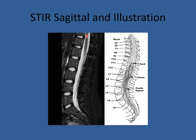The lateral view demonstrates the cord, which ends behind the body of L1, and you can see the individual nerve roots of the cauda equina. The CSF is in the canal. Depending on whether you're looking at a T1, T2, or STIR image, water can be white or black. These are the vertebral bodies and disc spaces. Anteriorly, you're going to see the aorta and great vessels coming down, as well as the organs, depending on the collimation of the MRI imaging.